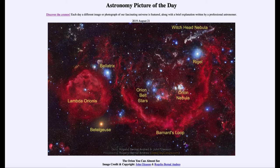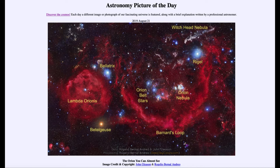So that was our picture of the day for August 21st, 2019. It was titled The Orion You Can Almost See. We'll be back again tomorrow for the next picture, previewed to be Southern Galaxy. So we'll see what that is about tomorrow. Until then, have a great day everyone, and I will see you in class.